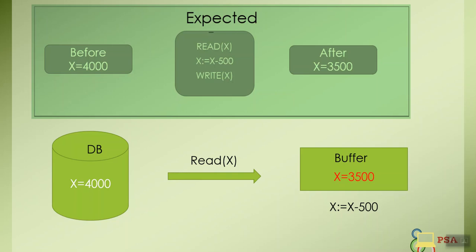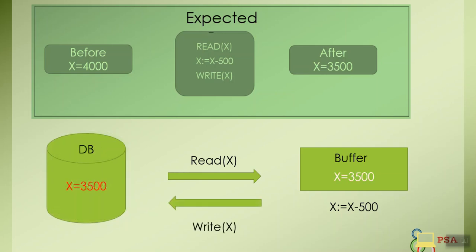Let's say at the same time X gets 500 cash from the ATM. The third operation is going to update the buffer value into the database so X final value will be equal to 3500.